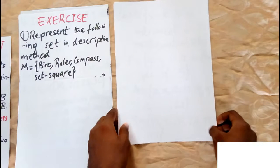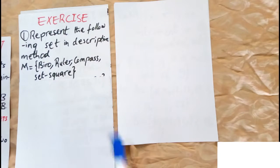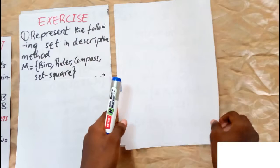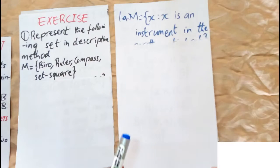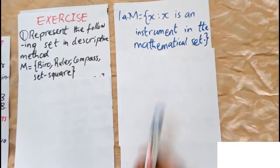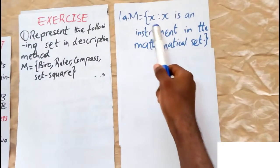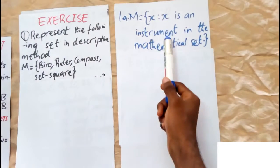The first set is set M, having ruler, compass, and a set square. You can represent it descriptively like this: x such that x is an instrument in the mathematical set.